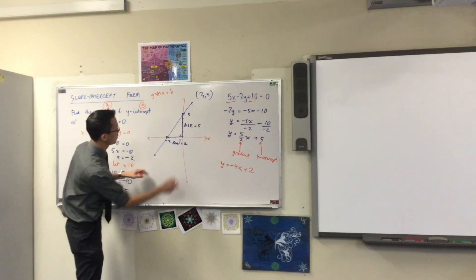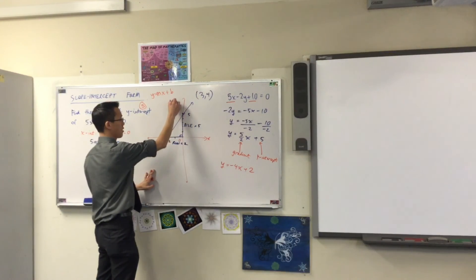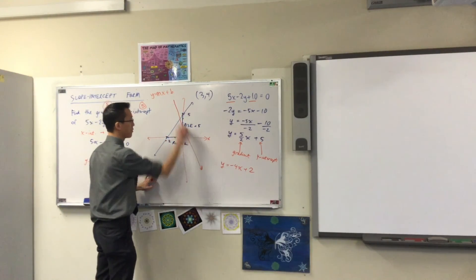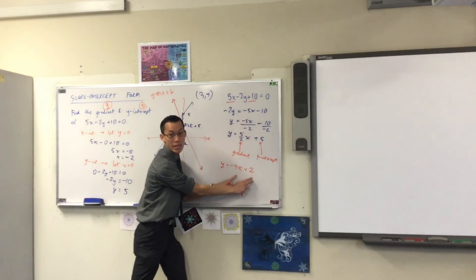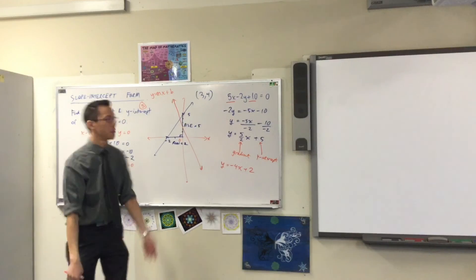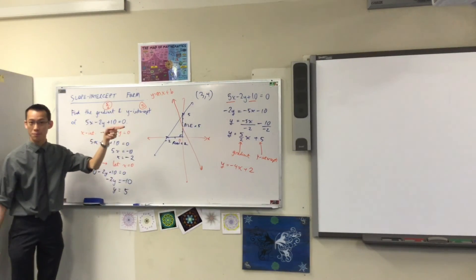Right? So this looks something like, we said it's quite steep, right? Something like that. There you go. That'd be y equals minus 4x plus 2. You can look at this and you can read the features directly off it, which is why we call it slope-intercept form. Okay.